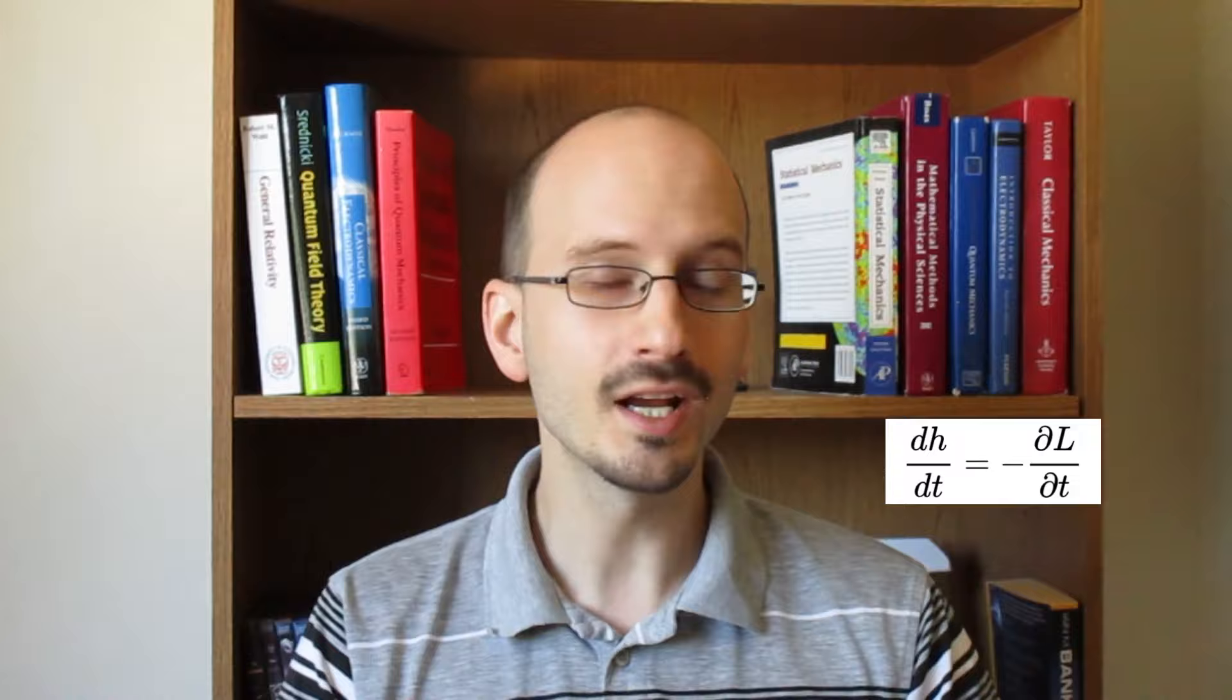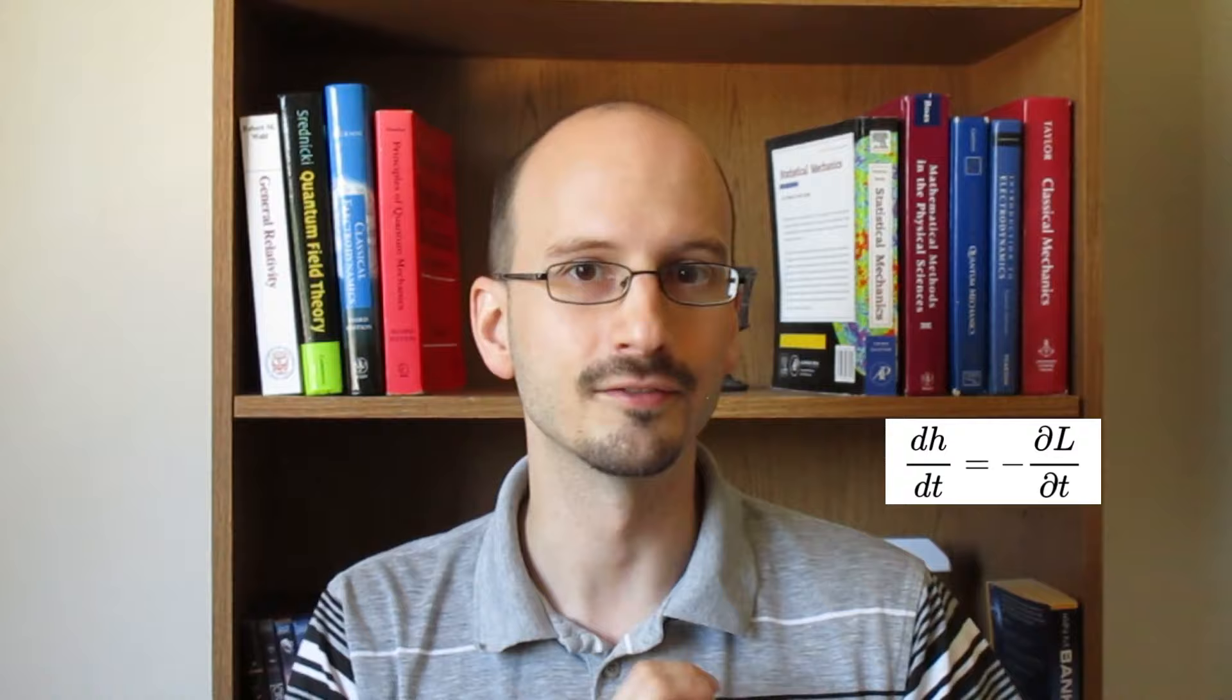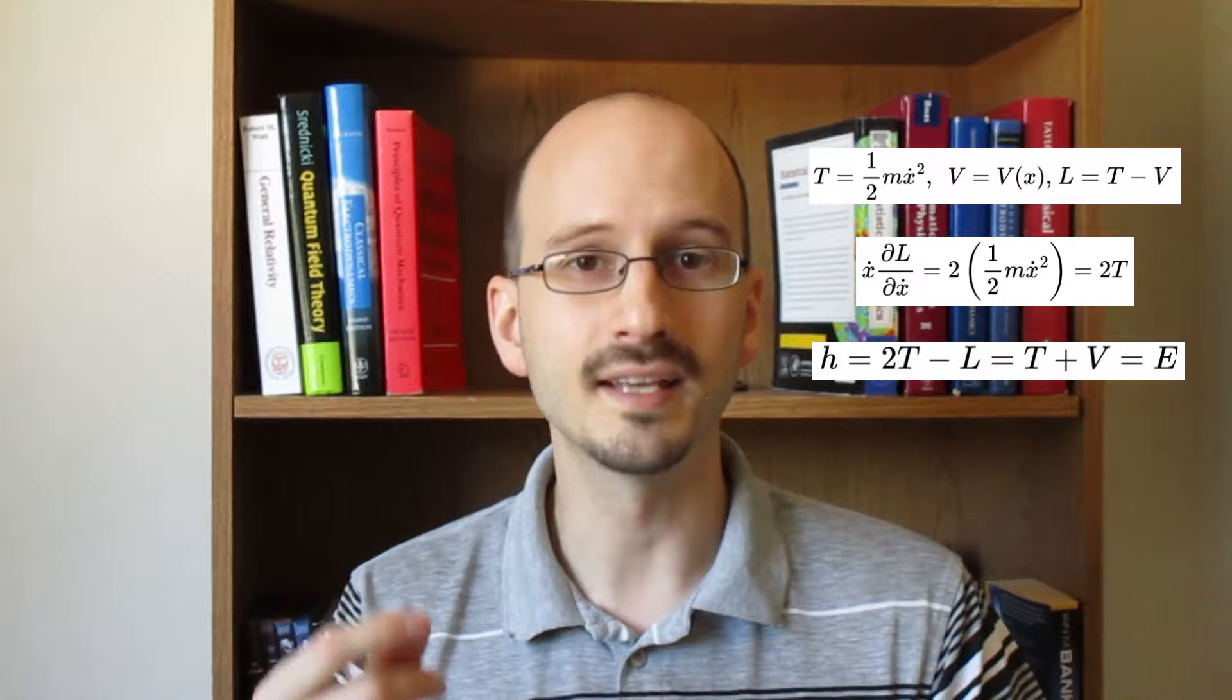If the Lagrangian does not depend explicitly on time, then the change in the energy function equals zero, and the energy function is conserved. And here I'm going to interject with my own example, which is a particle in one-dimensional space with a conservative field. The kinetic energy is one-half times the mass times the velocity squared, as we know from college physics. The potential energy only depends on the position. And of course, the Lagrangian is equal to kinetic energy minus potential energy. If we do the derivative for the energy function, we end up with two times the kinetic energy. So the energy function is equal to two times the kinetic energy minus the Lagrangian, or two times the kinetic energy minus the kinetic energy plus the potential energy, or the kinetic energy plus the potential energy, or the total energy. Which means in this case, the energy function is equal to the total energy, and the total energy is conserved.